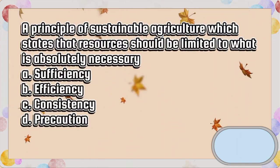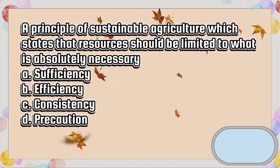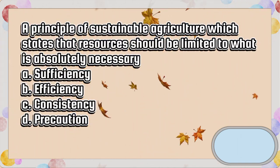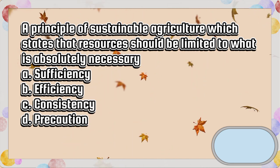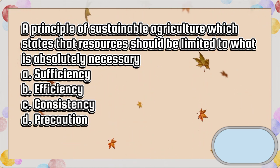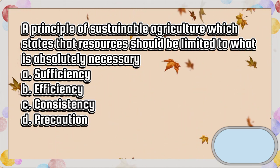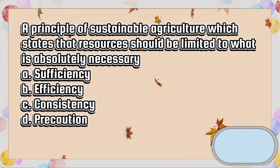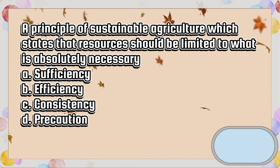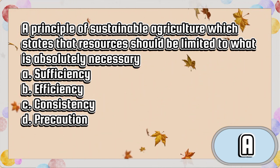A principle of sustainable agriculture which states that resources should be limited to what is absolutely necessary. A. Sufficiency. B. Efficiency. C. Consistency. D. Precaution. The answer is letter A.